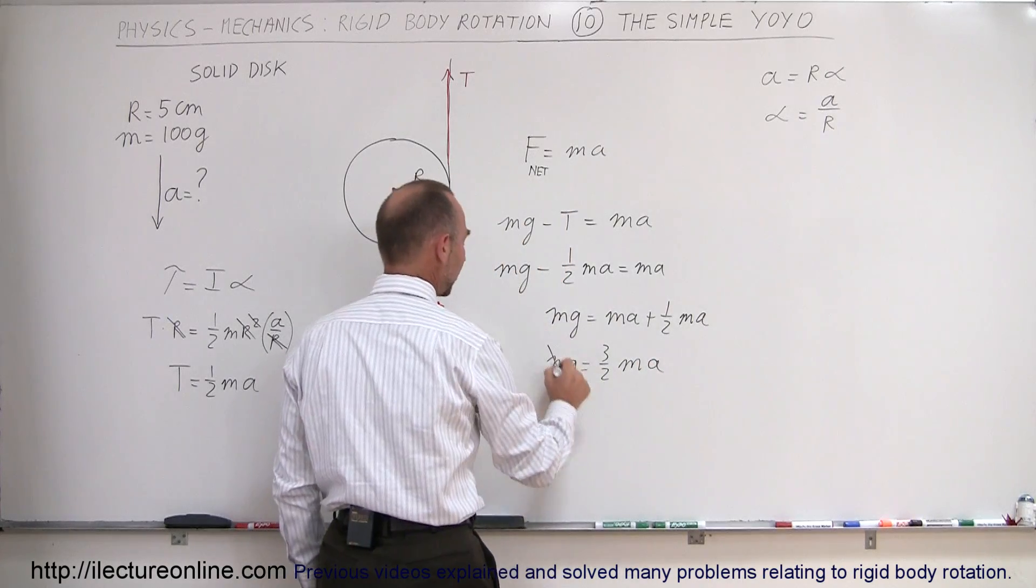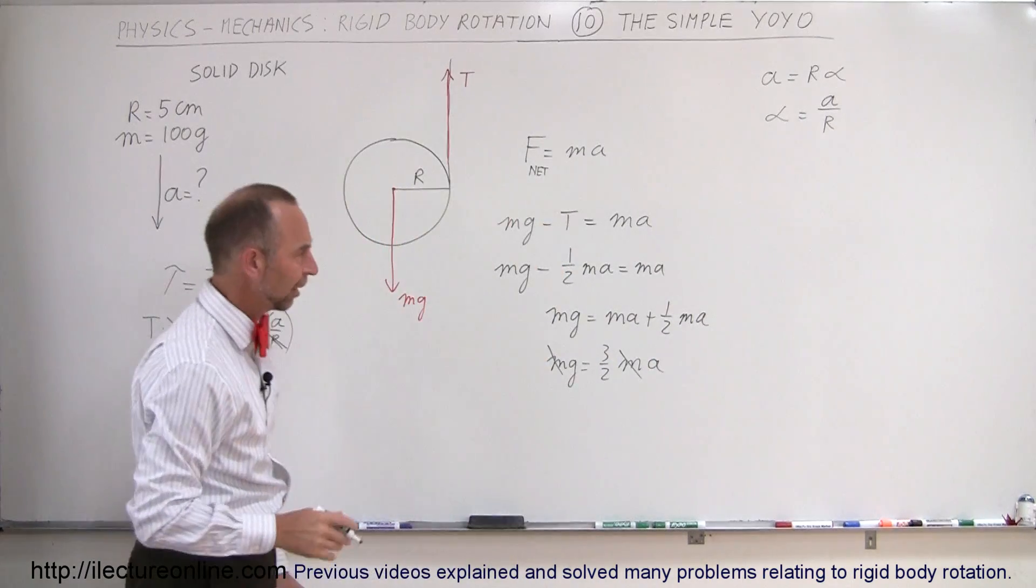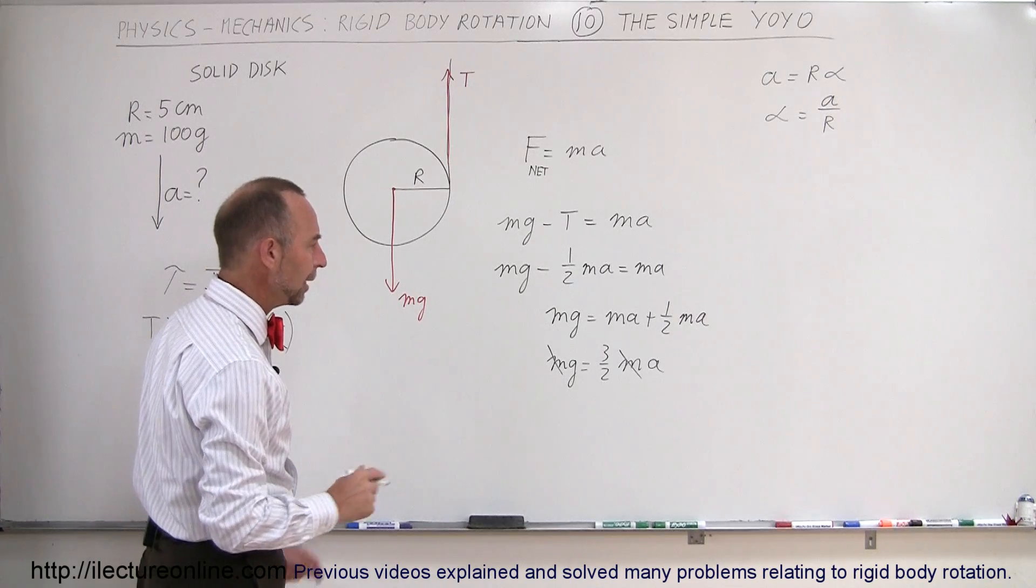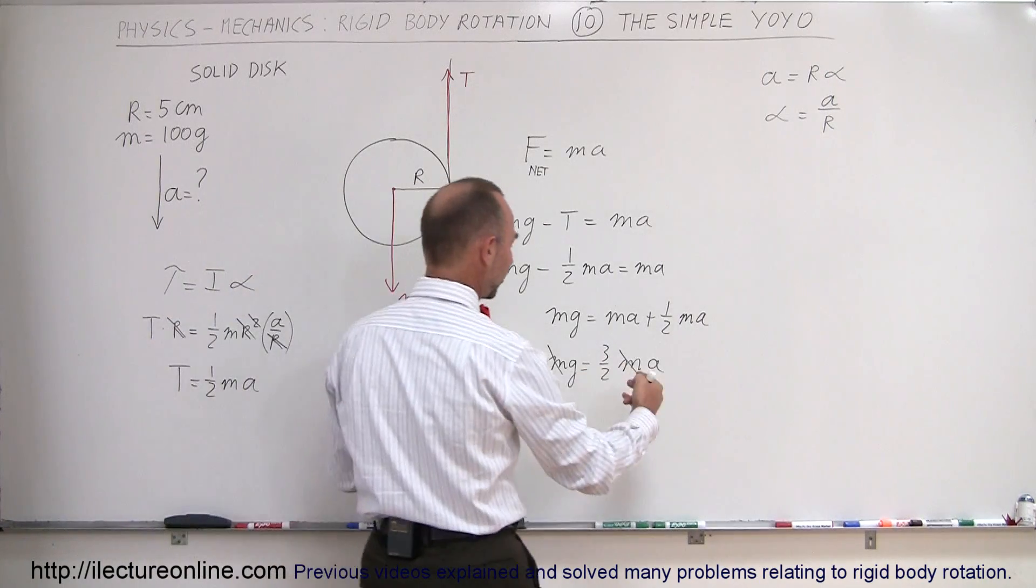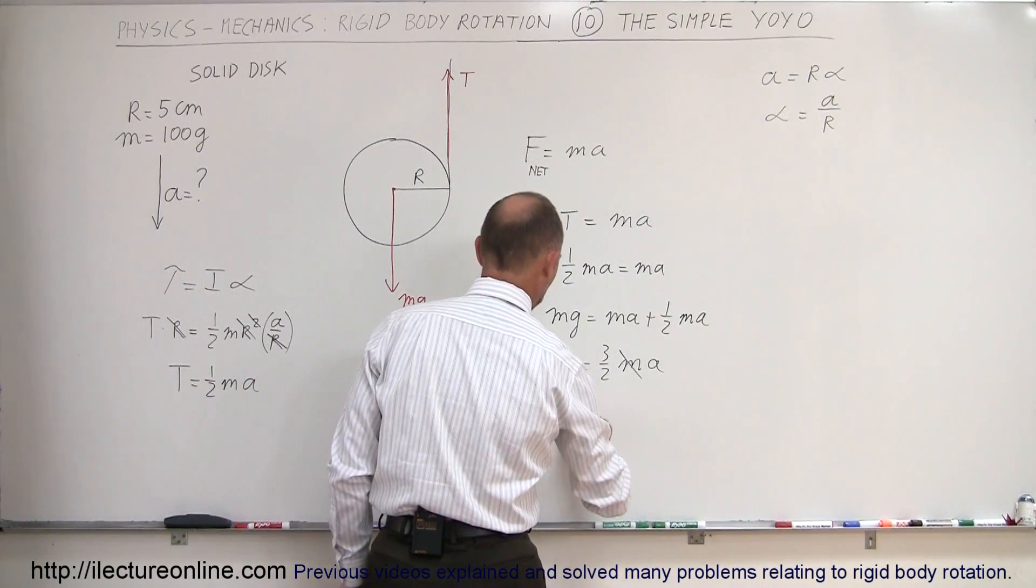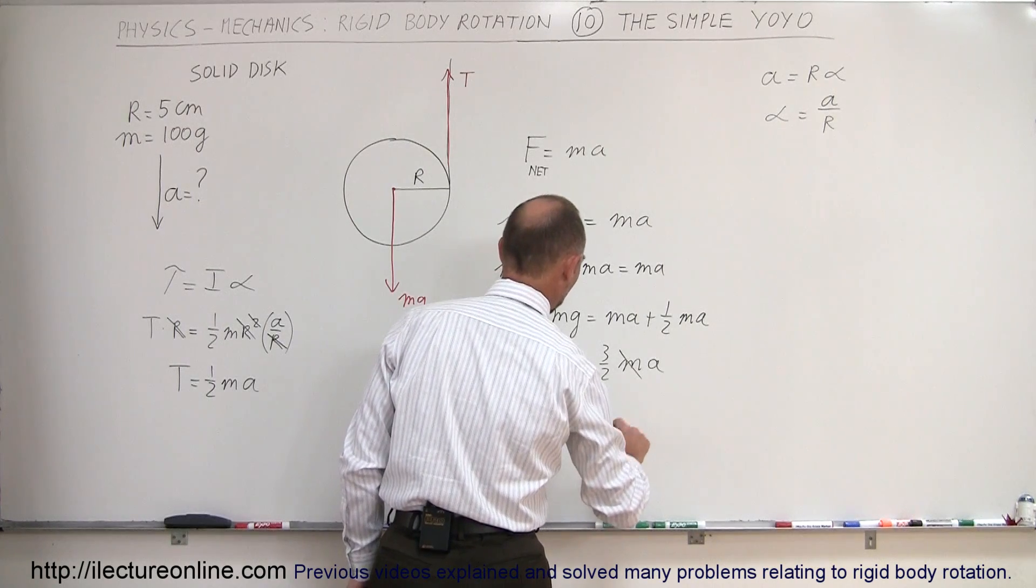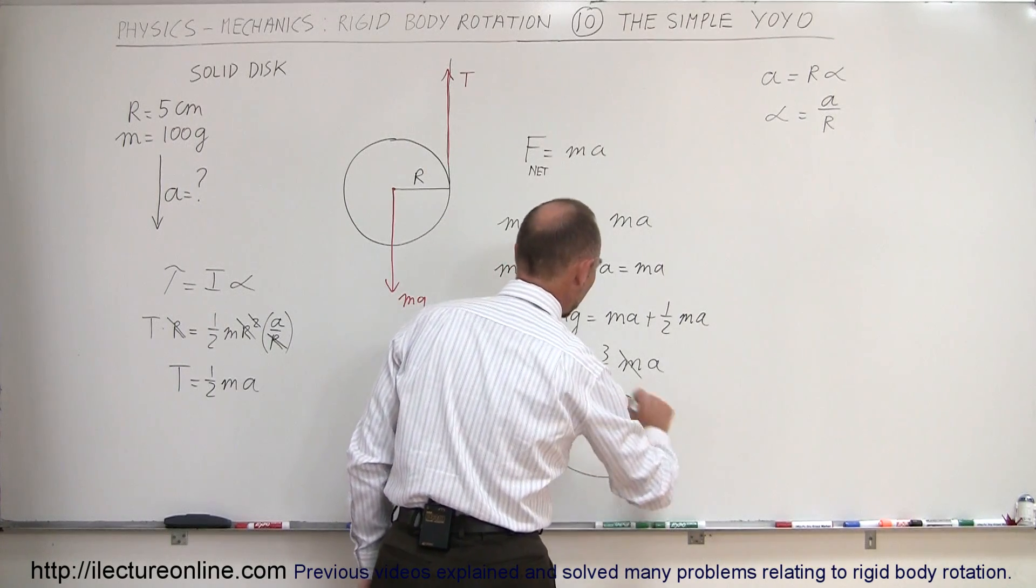Notice that there's a mass on both sides—of course we could have already canceled it out earlier, but there we go. Now when we solve that for A, we multiply both sides by two-thirds, turn the equation around, we get A is equal to two-thirds G, and that will be the acceleration of the yoyo.